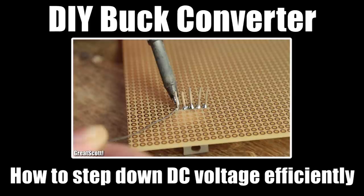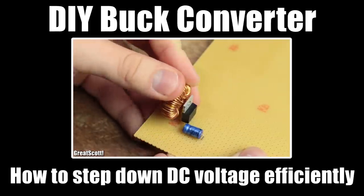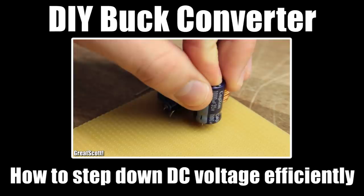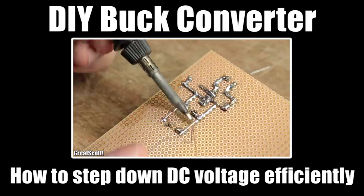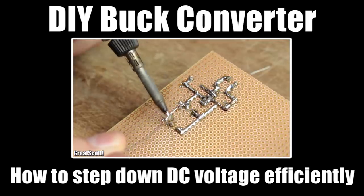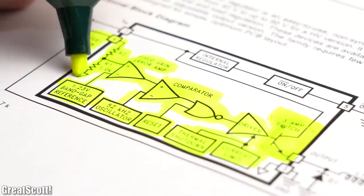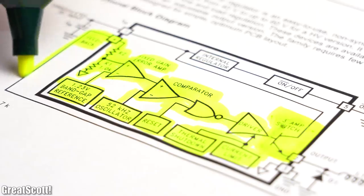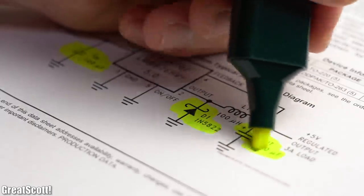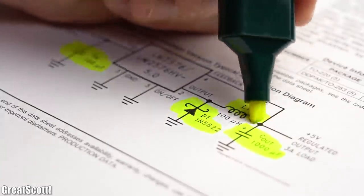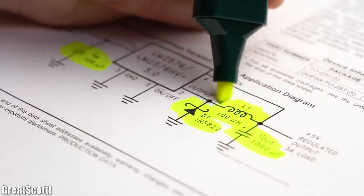That is why I also created one during a previous video of mine with the help of the LM2576 simple switcher IC from Texas Instruments. I use this IC because it combines a MOSFET switch with the required feedback control system, and thus building up the buck converter circuit only required four additional passive components.